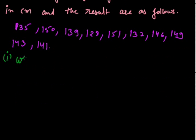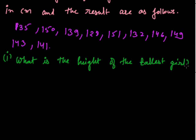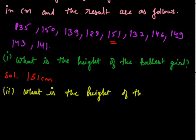Now the first part is what is the height of the tallest girl. The maximum height in this observation is 151. So the tallest girl is of 151 centimeters. The second part is what is the height of the shortest girl. The shortest girl is of 128 centimeters.